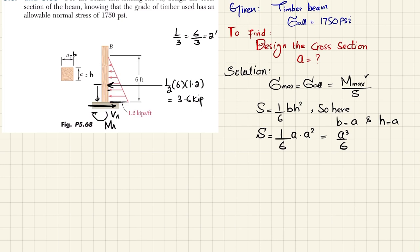Now we apply sum of all forces along horizontal direction is equal to 0, and force taking this direction is positive. So we have VA is in positive direction and this load is in negative direction.